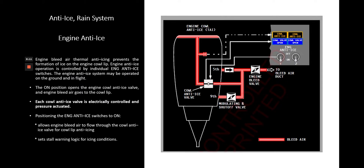Let's talk about the engine anti-ice system. Engine bleed air thermal anti-icing prevents the formation of ice on the engine cowl lip. Engine anti-ice operation is controlled by individual engine anti-ice switches. The engine anti-ice system may be operated on the ground and in flight. The on position opens the engine cowl anti-ice valve, and engine bleed air goes to the cowl lip.